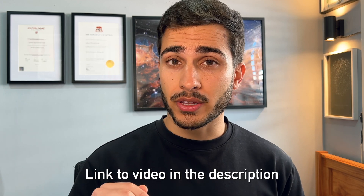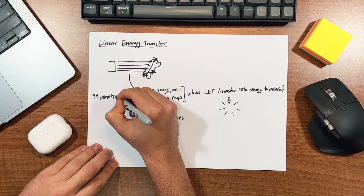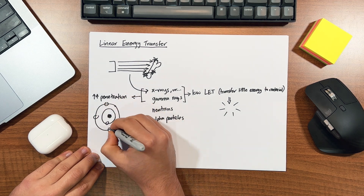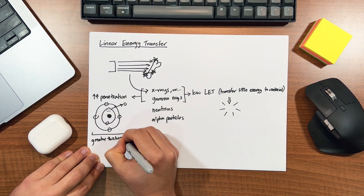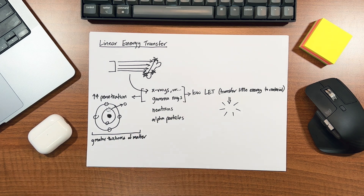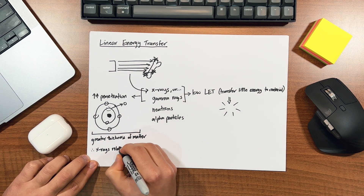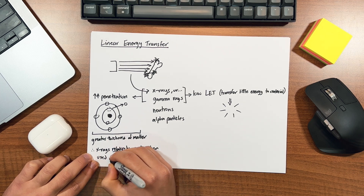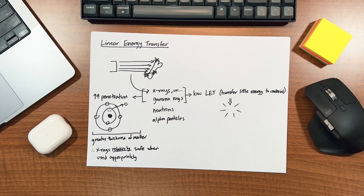If you don't know what the Compton effect is, I've made a separate video on that which you can find down below. X-rays and gamma rays have quite a high penetrating power compared to particulate radiation, and as a result, the ionizations occur in low densities and over a much greater thickness of matter. This means that x-rays are relatively safe for use in radiography, as long as they're used in appropriate doses with the proper safety measures in place.